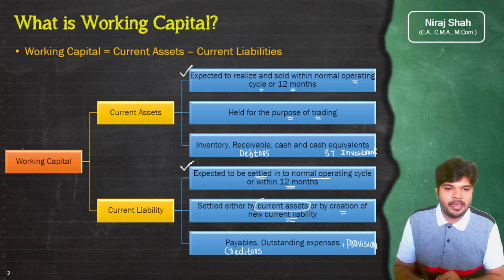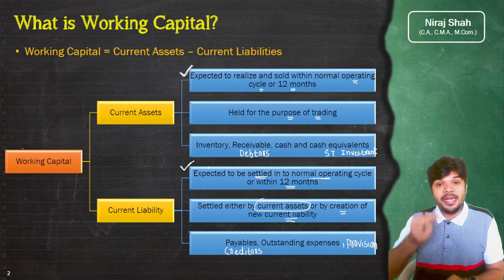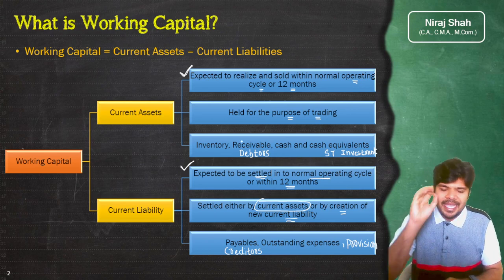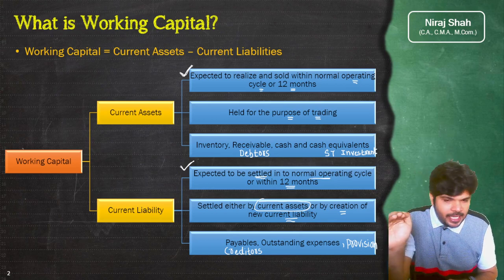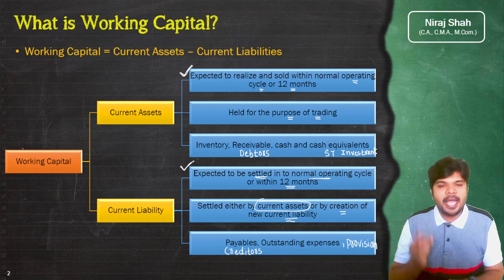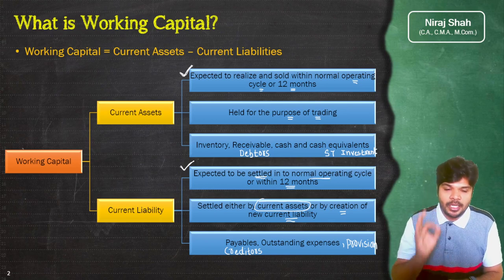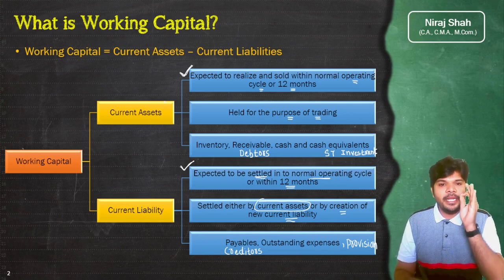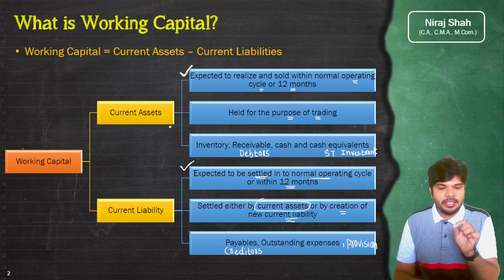Main point यह है कि कोई भी asset या liability अगर normal operating cycle से बनी है, तो उसे उसी normal operating cycle में settle करना होगा। Maximum time period one year है — कोई भी asset अगर one year में वापस नहीं आने वाली तो वो current asset नहीं, long term asset हो जाती है। इसी तरह कोई भी liability अगर one year में settle नहीं होती, तो वो long term liability बन जाती है। दोनों के लिए 12 months compulsory है।